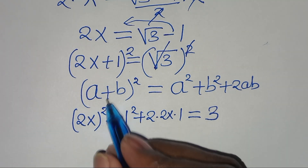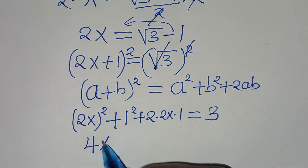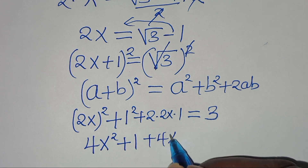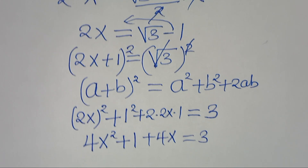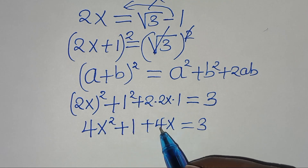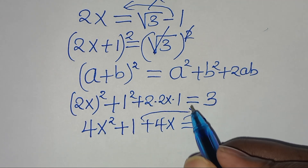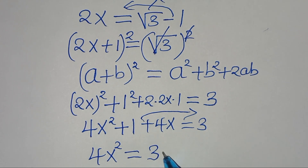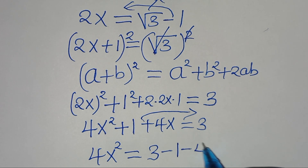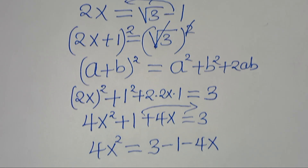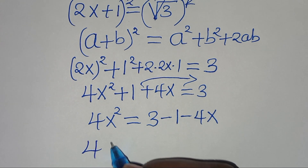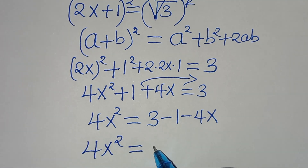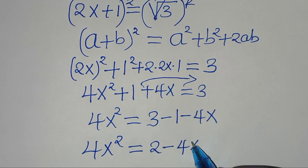So we have 2x squared, which is 4x squared, then plus 1, then plus 4x, this is equal to 3. The next step is to take 1 plus 4x to the right hand side, so that we have 4x squared equal to 3 minus 1 minus 4x. So here we have 4x squared equal to 2 minus 4x.